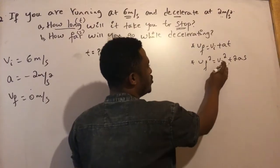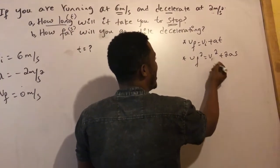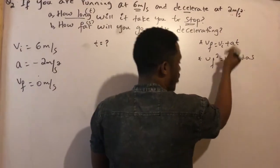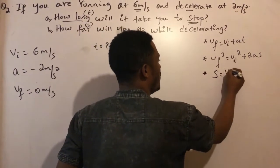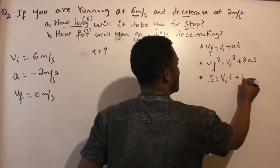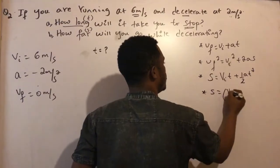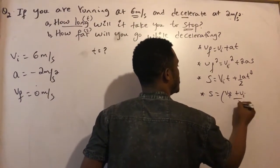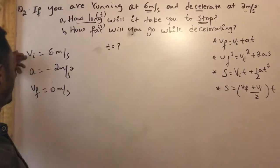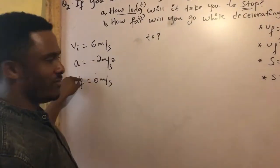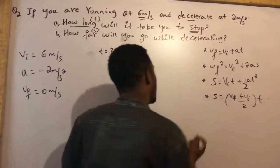The formula is V final squared equals V initial squared plus 2As. We have to rearrange it. V final equals V initial plus A times T. So we can use this formula to find time.